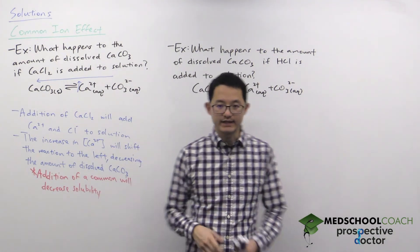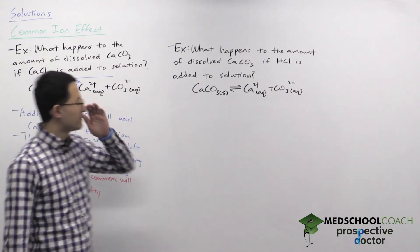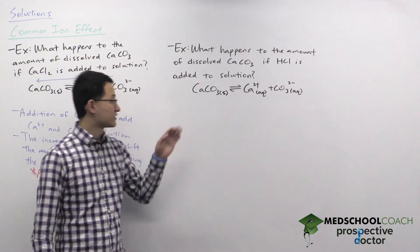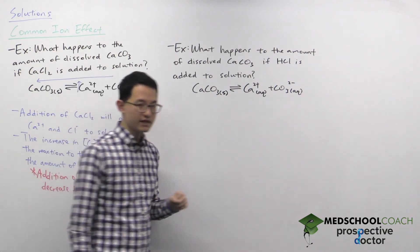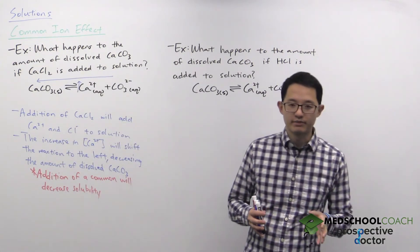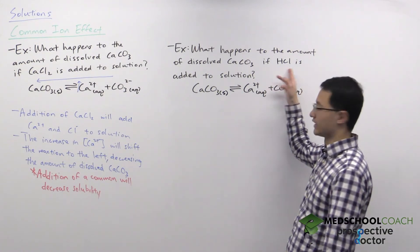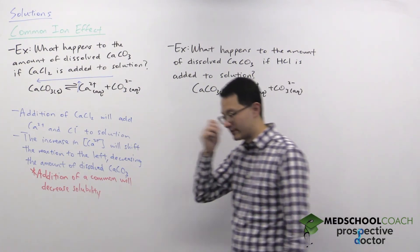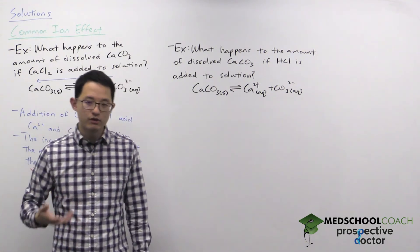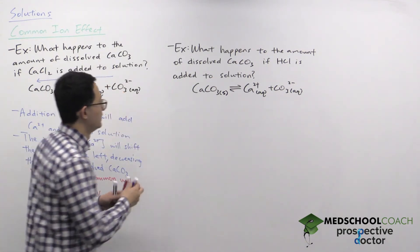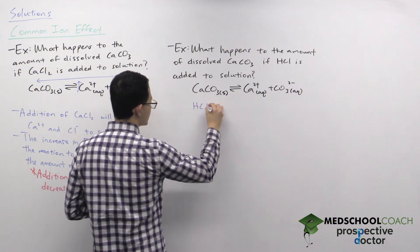In our second example, we're asking a similar question: what happens to the amount of dissolved calcium carbonate if HCl is added to solution? This one is a little bit trickier because HCl has hydrogen and chlorine, and neither is a common ion with calcium carbonate, so this requires a little more thinking.